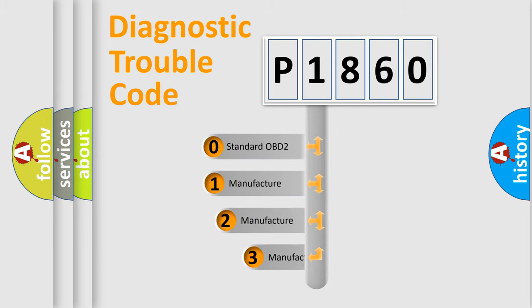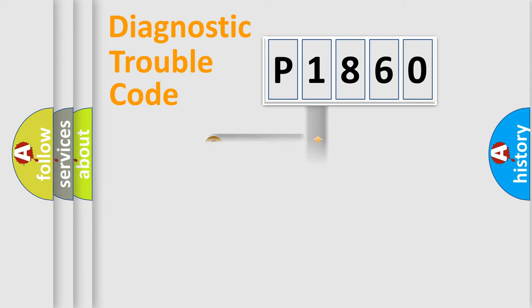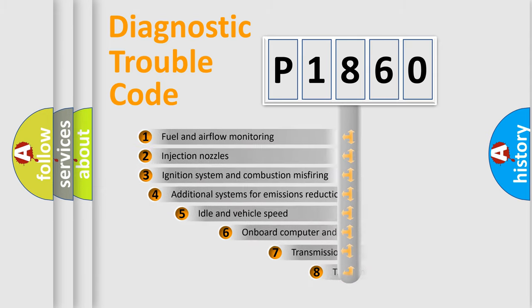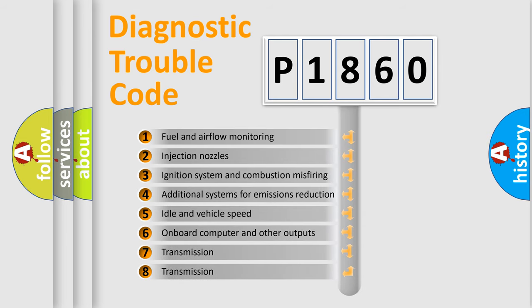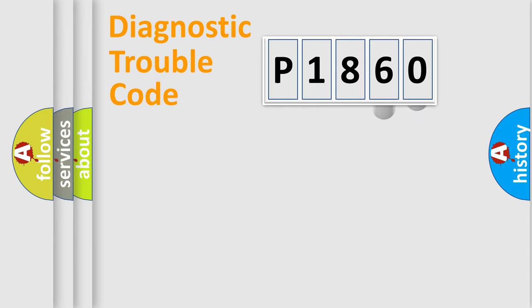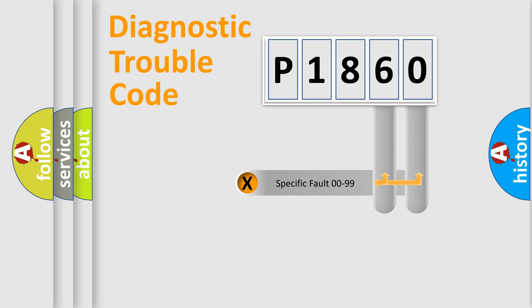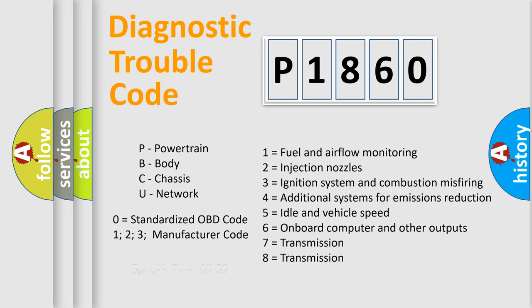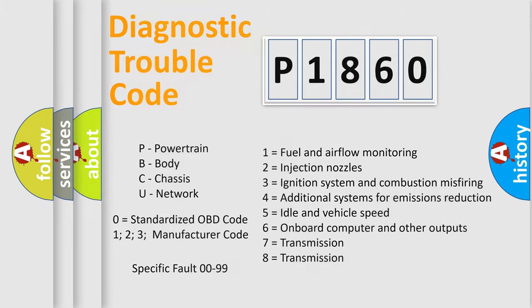If the second character is expressed as zero, it is a standardized error. In the case of numbers 1, 2, or 3, it is a more manufacturer-specific expression of a car-specific error. The third character specifies a subset of errors. This division is valid only for the standardized DTC code, where only the last two characters define the specific fault of the group.